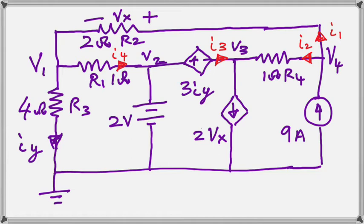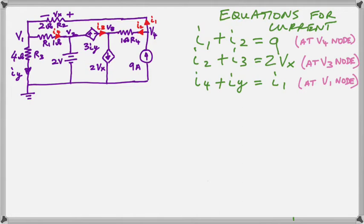Now the next thing you would need to do would be to write some equations for those currents. And that is what we have done here. We have written current equations at the node 1, the node 3, and the node 4.